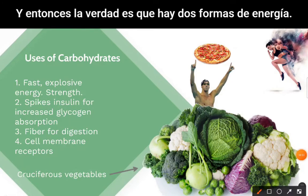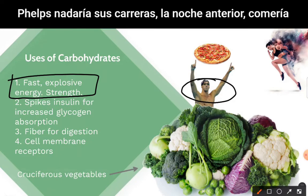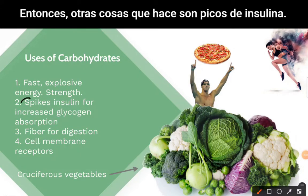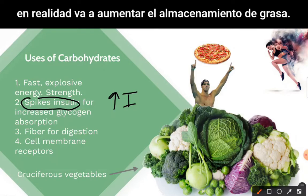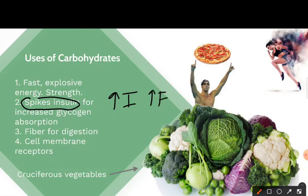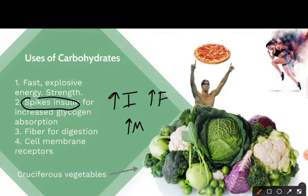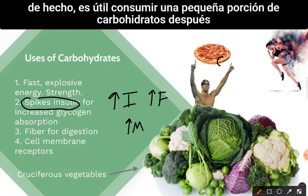There are two forms of energy. The advantage of carbs is that they're fast and explosive. When Michael Phelps would swim his races, he'd eat like three pizzas the night before — that was his secret. Carbs also spike insulin, which is a hormone. When you increase insulin, you increase fat storage — but that's not always bad, because it also increases muscle synthesis. It's actually helpful to have a small portion of carbs after a workout if you're trying to get bigger and stronger.